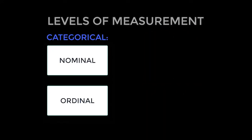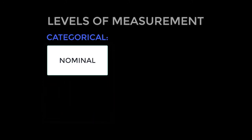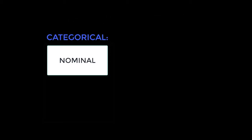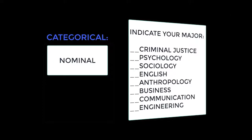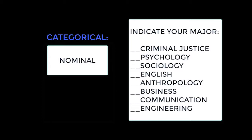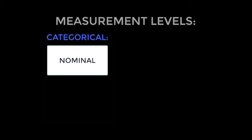For nominal measurement, it means that we capture the data in name only — think of this as named categories. For example, individuals might identify a personality tendency such as preference for expression: extroversion or introversion. Another example would be to ask individuals to identify their undergraduate major. In these examples, the questions provide categorical information about the participant — nominal data. Nominal level data has limitations because it only identifies general information, and is also mathematically limited in terms of analysis.